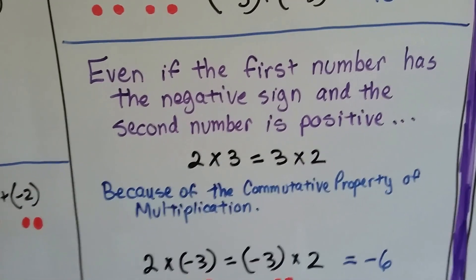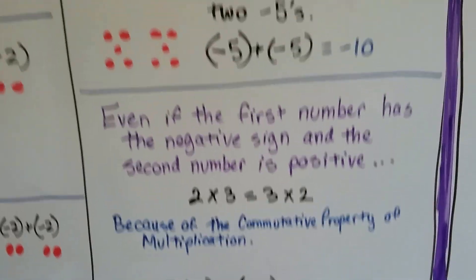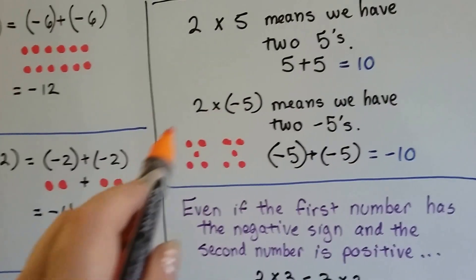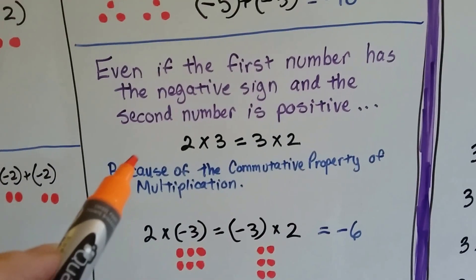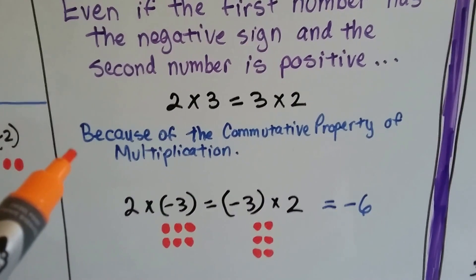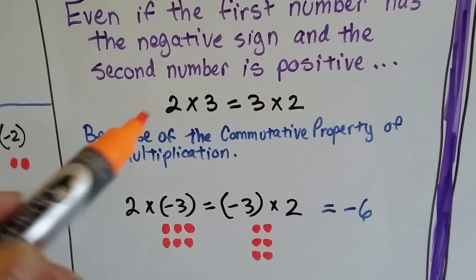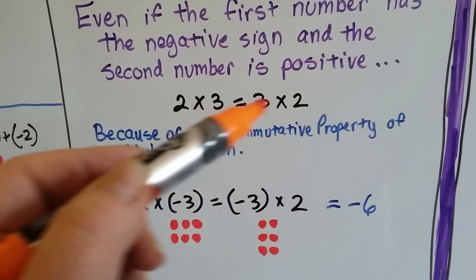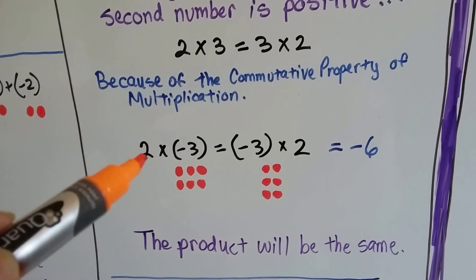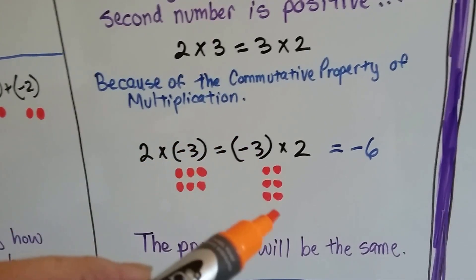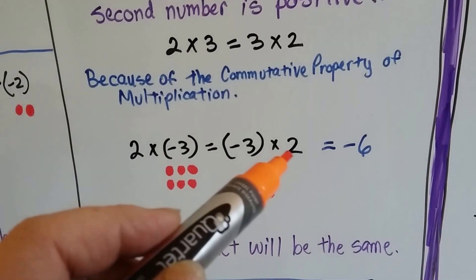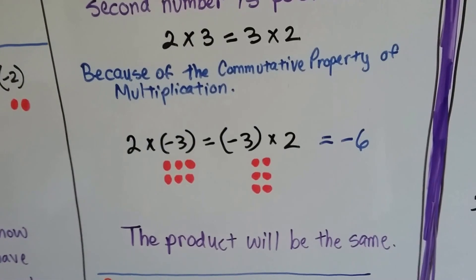Even if the first number has the negative sign and the second number is positive — because on all of these, the first one was positive and we're multiplying it to a negative number — because of the commutative property of multiplication, it doesn't matter which direction you're going, it's going to still be the same thing. It doesn't matter if the negative sign is on the first number or the second number. It's still going to equal the same thing. If we have two negative 3s, it's the same thing as saying negative 3 two times. The product is going to be the same.